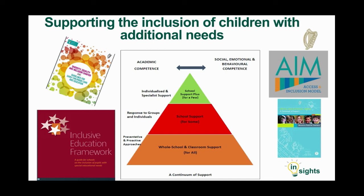Ideally, before the child starts in primary school, teachers should review the individual access and inclusion plan with the link coordinator and the child's key person from the early learning and care setting, the child's parents and the child him or herself, as well as the assessment data generated about the child. This will allow time to access relevant supports such as assistive technology or a special needs assistant, where deemed necessary by the local special educational needs organiser, or SENO.